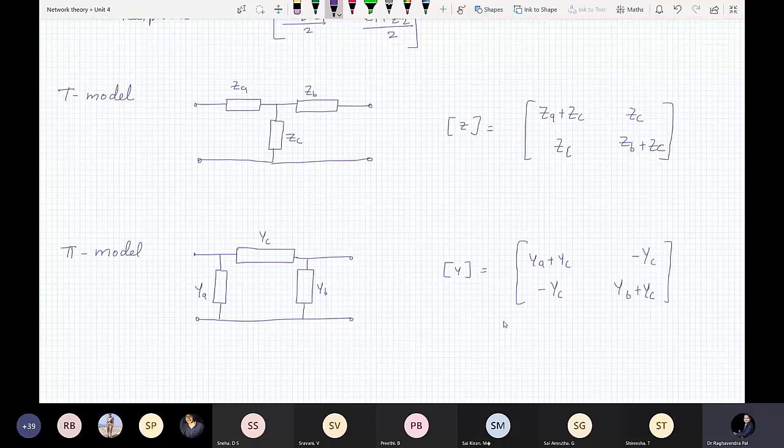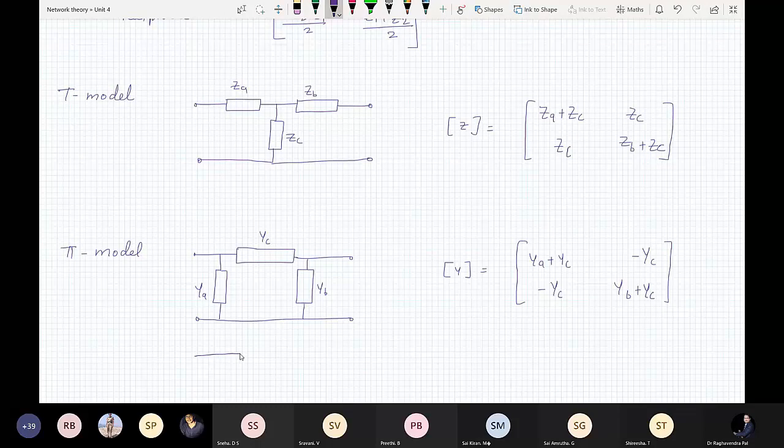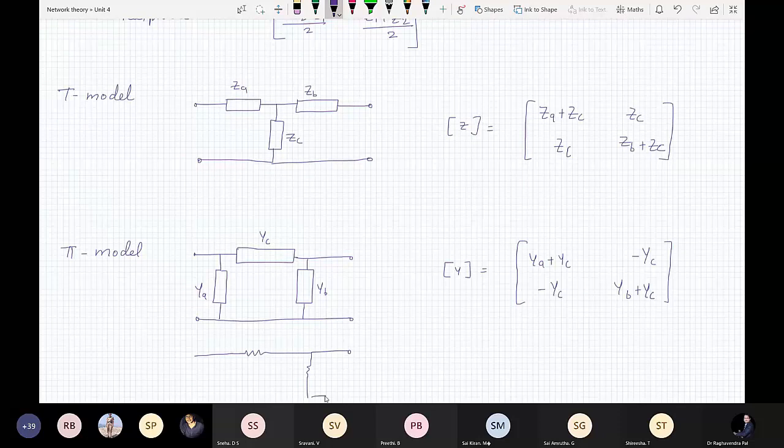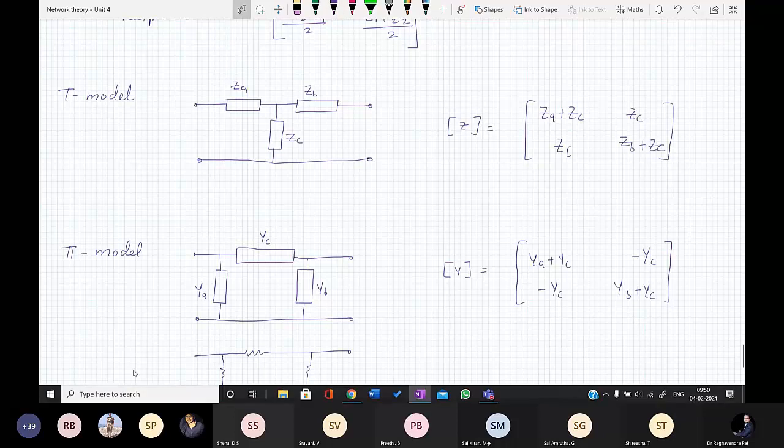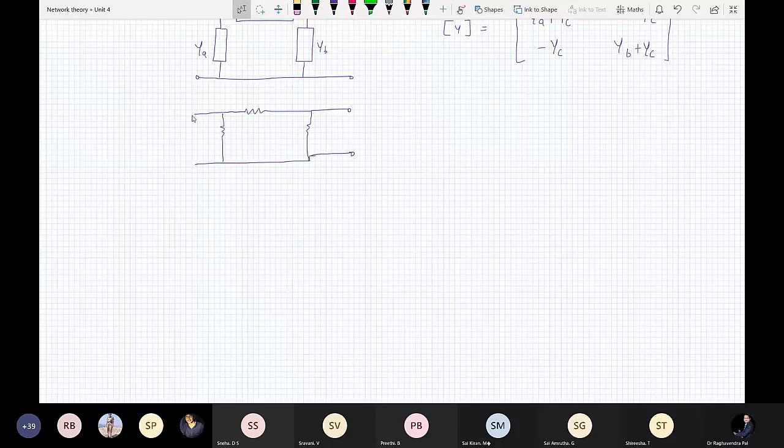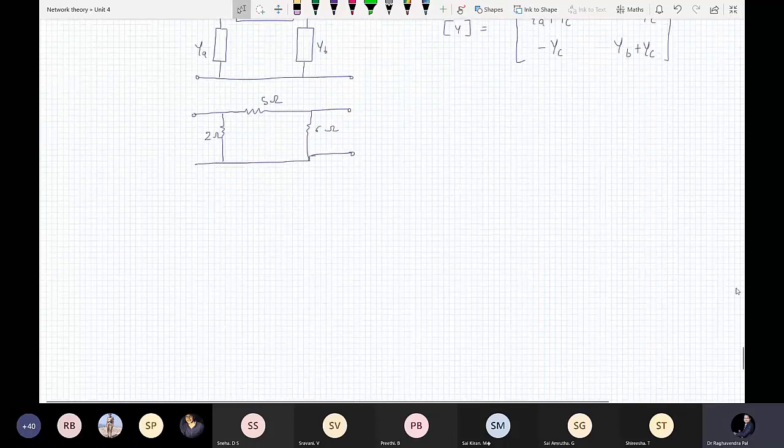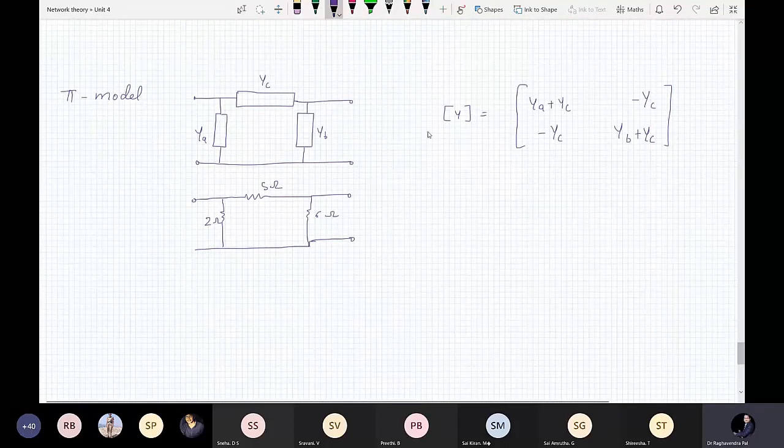Now, what will happen if a network is given like this? So it is 2 ohm, it is 5 ohm, it is 6 ohm. So now, how to calculate Y? Can anybody tell me how to calculate Y? How to calculate this Y matrix?